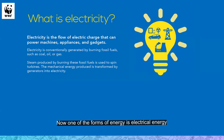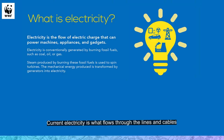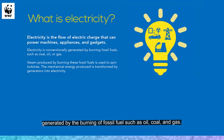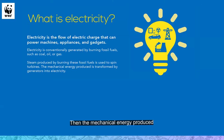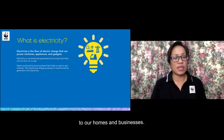One of the forms of energy is electrical energy — energy from the flow of an electric charge that can power machines, appliances, and gadgets, which is electricity. Electricity is conventionally generated by the burning of fossil fuels such as oil, coal, and gas, wherein the steam produced is used to spin turbines in power plants. The mechanical energy produced is then transformed by generators into electricity, which is transmitted to the national grid and distributed by energy utilities straight to our homes and businesses.